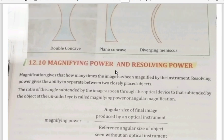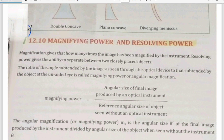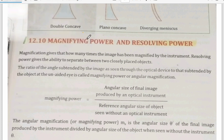We are going to have a topic that is magnifying power and resolving power — a topic of lens. We will see the magnifying power and resolving power. How many times the image has been magnified by the instrument — that is magnifying power. Resolving power gives the ability to separate between two closely placed objects. The ratio of the angles subtended by the image as seen through the optical device to that subtended by the object by the unaided eye is called magnifying power or angular magnification.